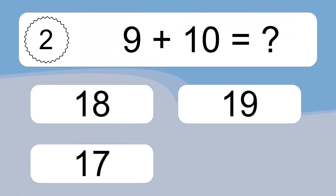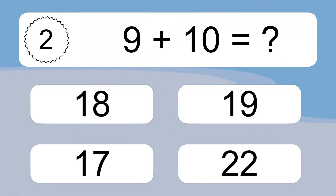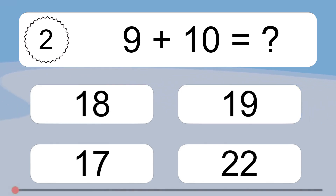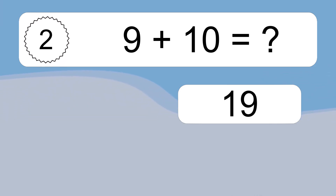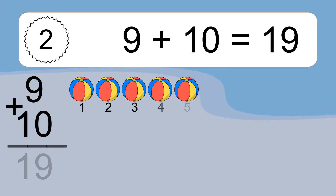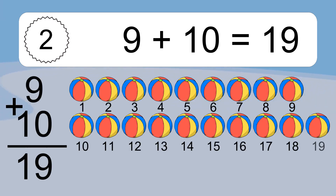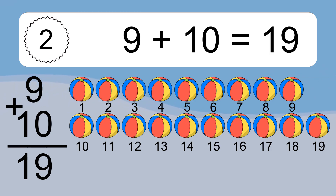9 plus 10 equals what? 9 plus 10 equals 19. Let's count it. 1, 2, 3, 4, 5, 6, 7, 8, 9, 10, 11, 12, 13, 14, 15, 16, 17, 18, 19.